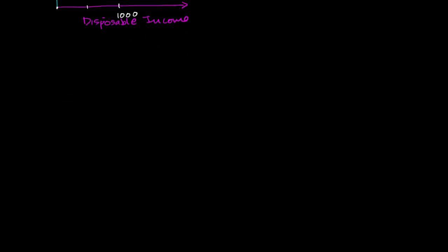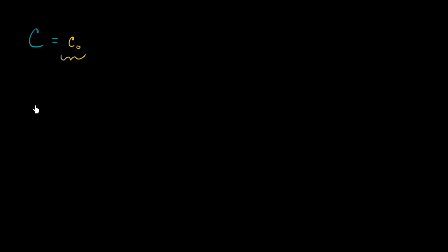So let's set up a linear consumption function. Aggregate consumption will have some base level of consumption no matter what — even if people have no aggregate income, they need to survive, they need food on the table, and may have to dig into savings. I'll call that lowercase c-sub-0, also referred to as autonomous consumption, because people will do it on their own even with no aggregate income.